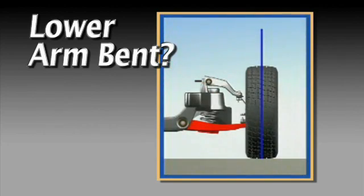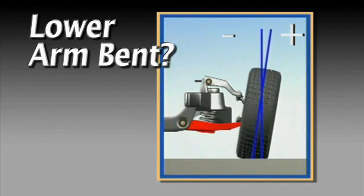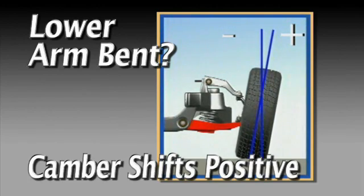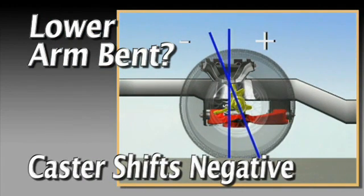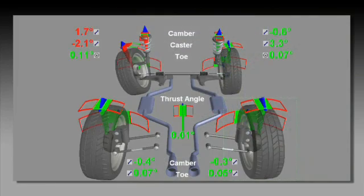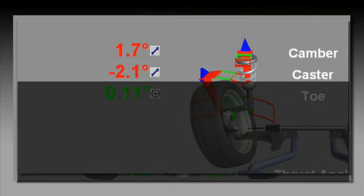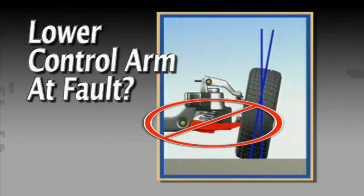Now imagine the lower control arm bent. As you can see, if the lower control arm is bent back and in, camber will move in a positive direction and caster will move in a negative direction. These positions match the errors on the vehicle. At this point, the lower control arm has become the number one suspect.